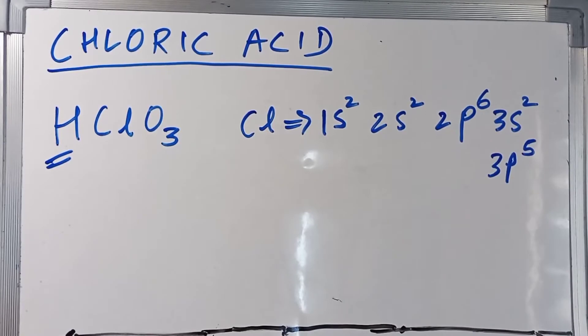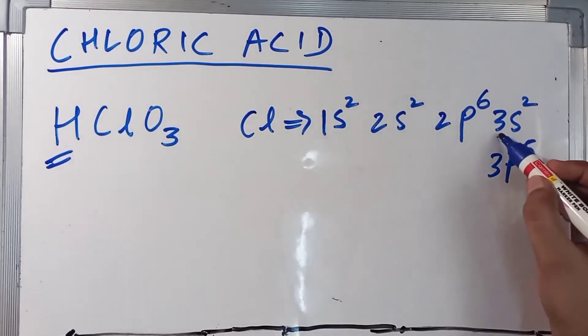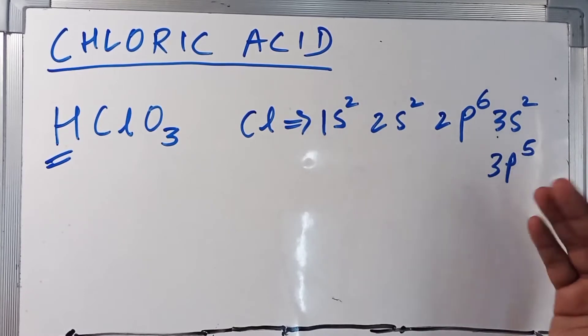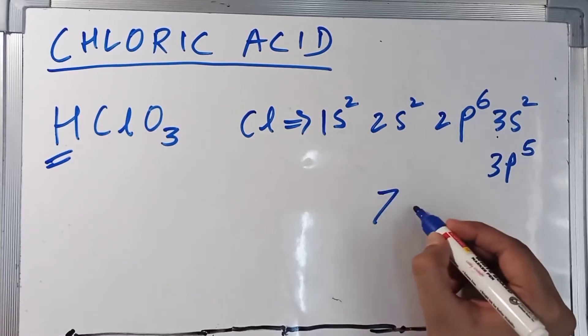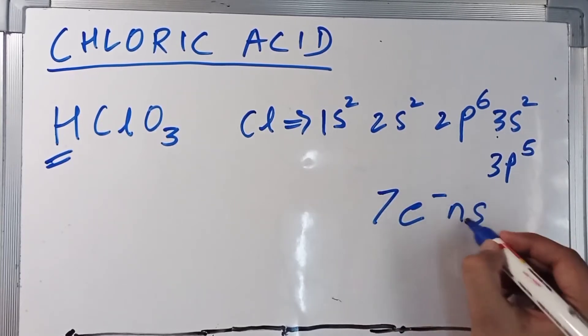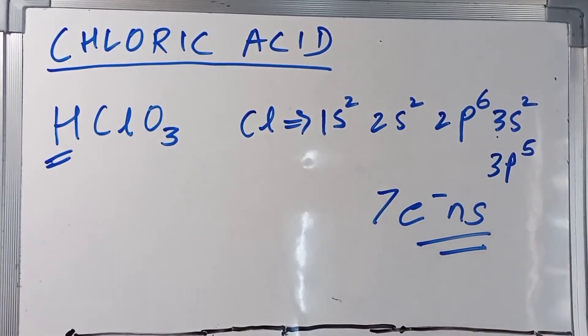And what is the valence shell here? The third shell. The third shell is the outermost shell, which is the valence shell. And how many electrons do we have in the valence shell? 2 plus 5 which is 7 electrons. Good.